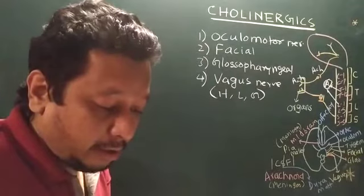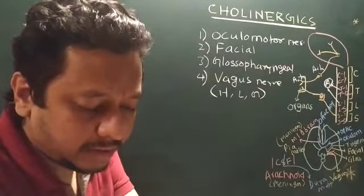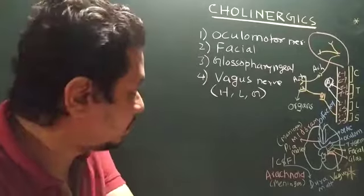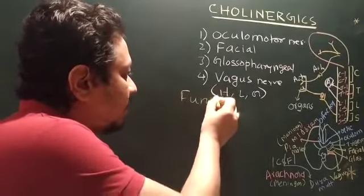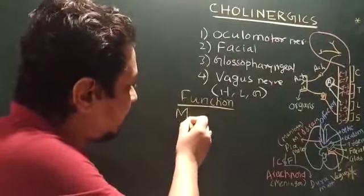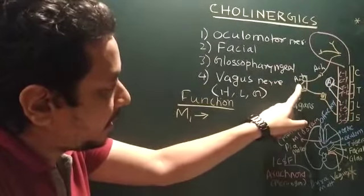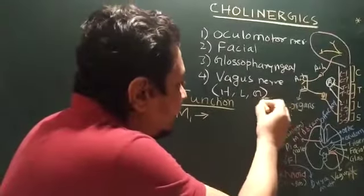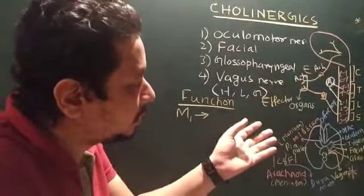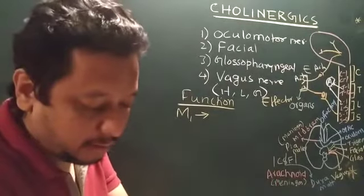The ending part of the vagus nerve is known as the nucleus ambiguus. Now let us discuss the functions of cholinergic neurons. The neuron going from the CNS to the peripheral organs and innervating the effector organ is known as the efferent neuron. The neuron going from the organ to the CNS is known as the afferent neuron — 'E' for effector organ.